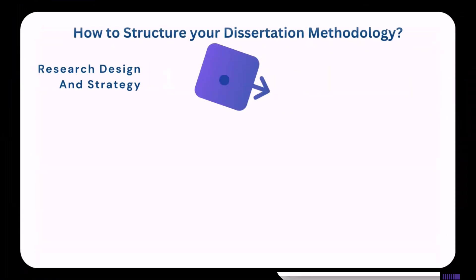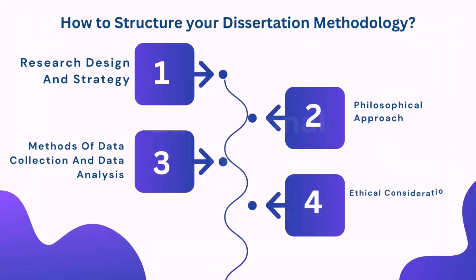How to structure your dissertation methodology. The typical structure of the methodology chapter is as follows: 1. Research design and strategy. 2. Philosophical approach. 3. Methods of data collection and data analysis. 4. Ethical considerations. 5. Reliability, limitations and generalizability.